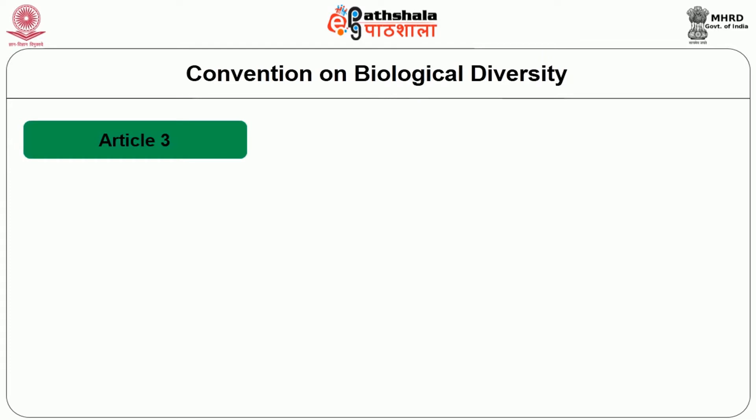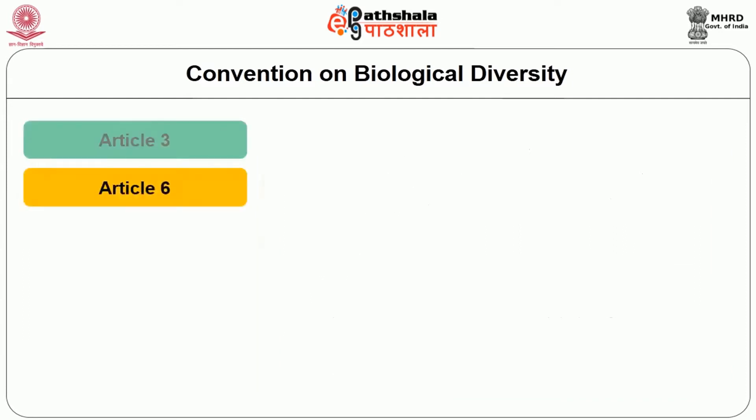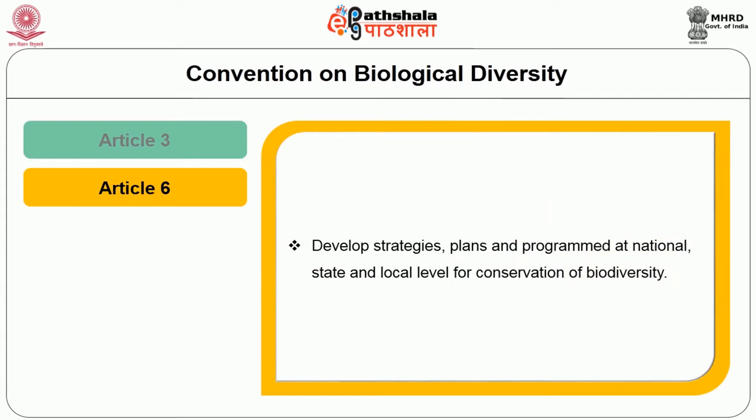Article 3 of the convention states that countries have sovereign rights to exploit their own resources within their jurisdiction or control, but without causing damage to the environment of other states or areas. The convention requires each contracting party to cooperate with other contracting parties, directly or through international organizations, for the conservation and sustainable use of biological diversity. Each member party should develop national strategies, plans and programs at national, state and local level for the conservation of biodiversity.